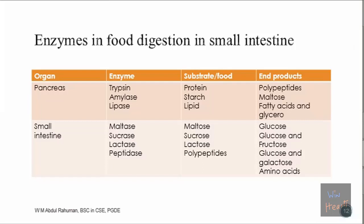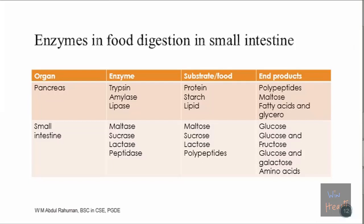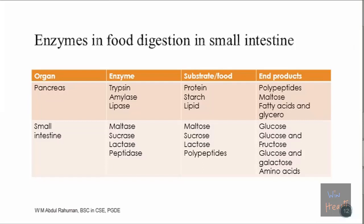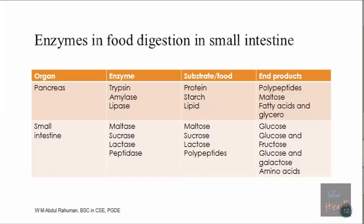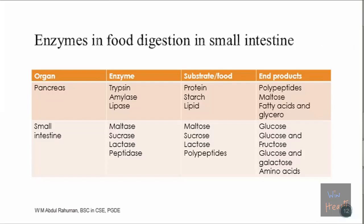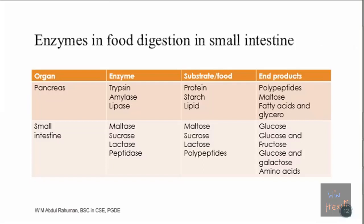Starch is converted to maltose, but we need to break maltose further. In the small intestine, maltase enzyme acts on maltose and converts it to glucose. Sucrase acts on sucrose - the sugar found in sugarcane - and breaks it down into glucose and fructose. Then lactase acts on lactose and breaks it down into glucose and galactose.